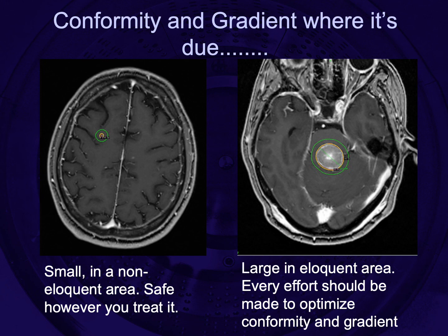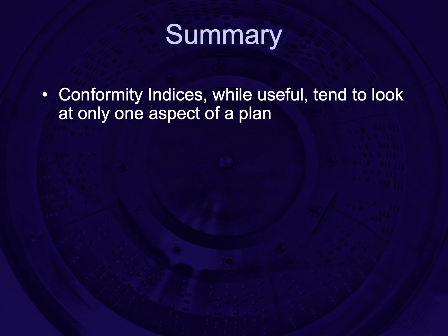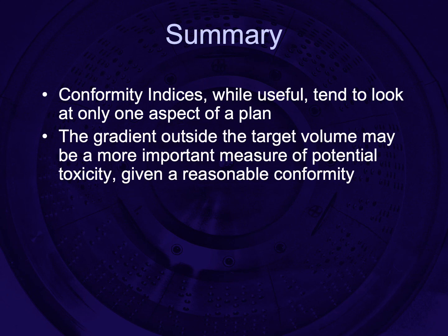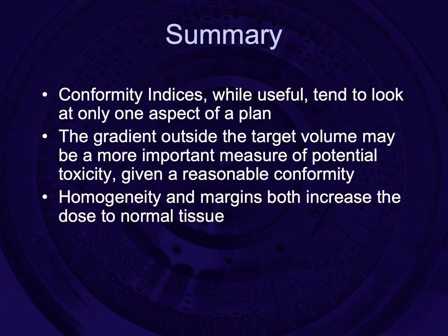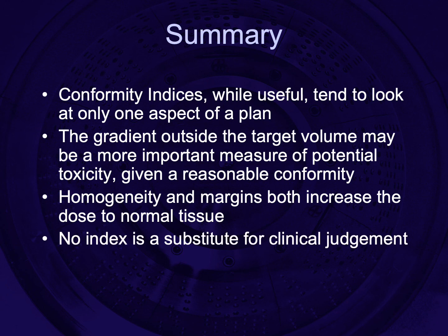It's important to know where conformity and gradient indices should be used. A small micrometastasis in a non-eloquent area will be safe however you treat it, so conformity or gradient index may matter less. But for a large brainstem metastasis, every effort should be made to optimise the conformity and gradient of that treatment plan. To summarise: conformity indices, while useful, tend to look at only one aspect of a plan; the gradient outside the target volume may be a more important measure of potential toxicity. Given a reasonable conformity, both homogeneity and margins increase the dose to normal tissue. Finally, no index is a substitute for clinical judgment.